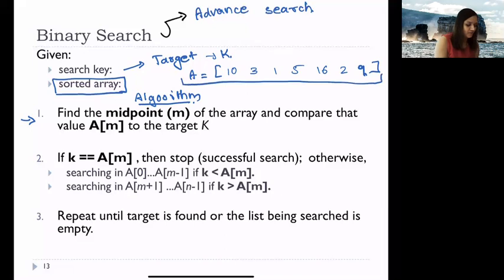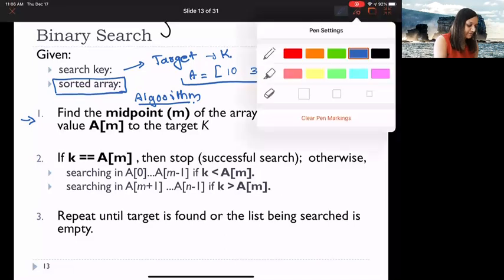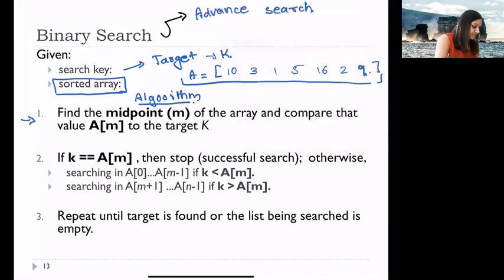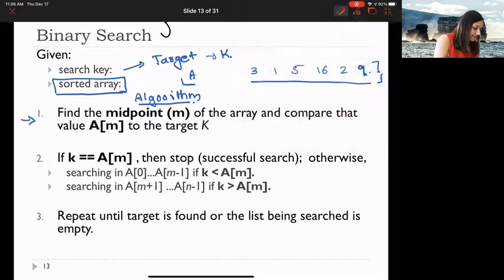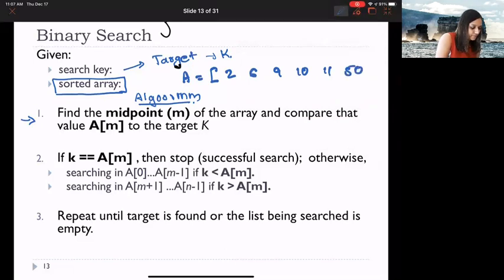Now let's look at the binary search algorithm. First, consider the array: 10, 3, 1, 5, 16, 2, 9 — can we perform binary search on this? No! This is not a sorted array. As soon as you see this array your reaction should be: this is not sorted, so we cannot use it for binary search. We need a sorted array as our example.